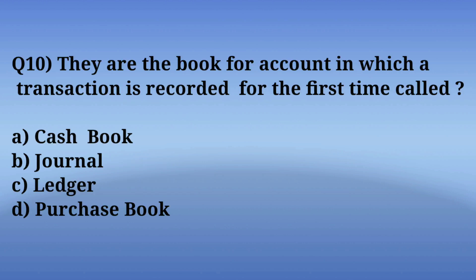Question number 10: The book of accounts in which a transaction is recorded for the first time is called what? Options are: A. Cash book, B. Journal, C. Ledger, D. Purchase book. The correct answer is Option B — Journal. Journal is the first book of entry.